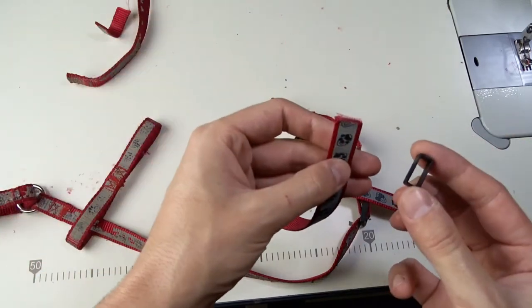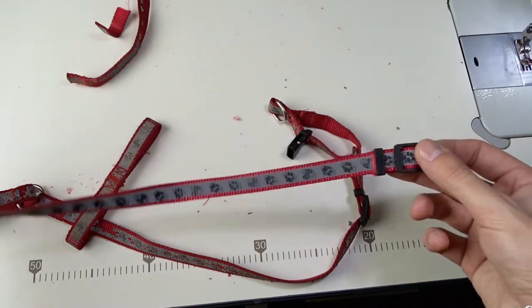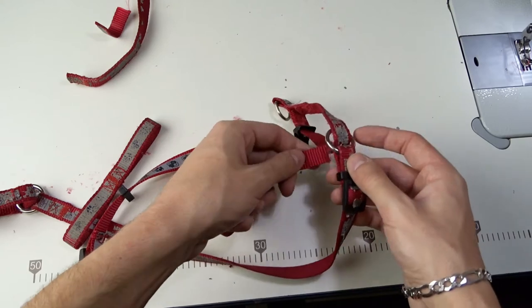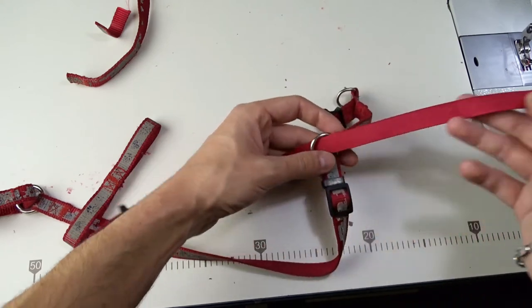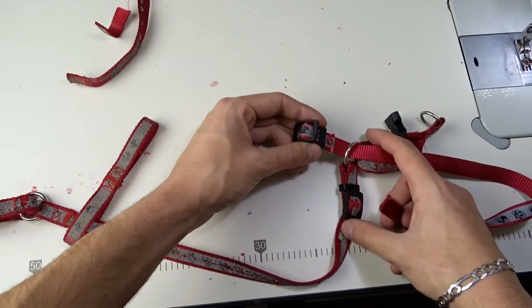Now insert the plastic stopper. Pass the webbing through the metal ring, then through the plastic stopper and through the regulator.